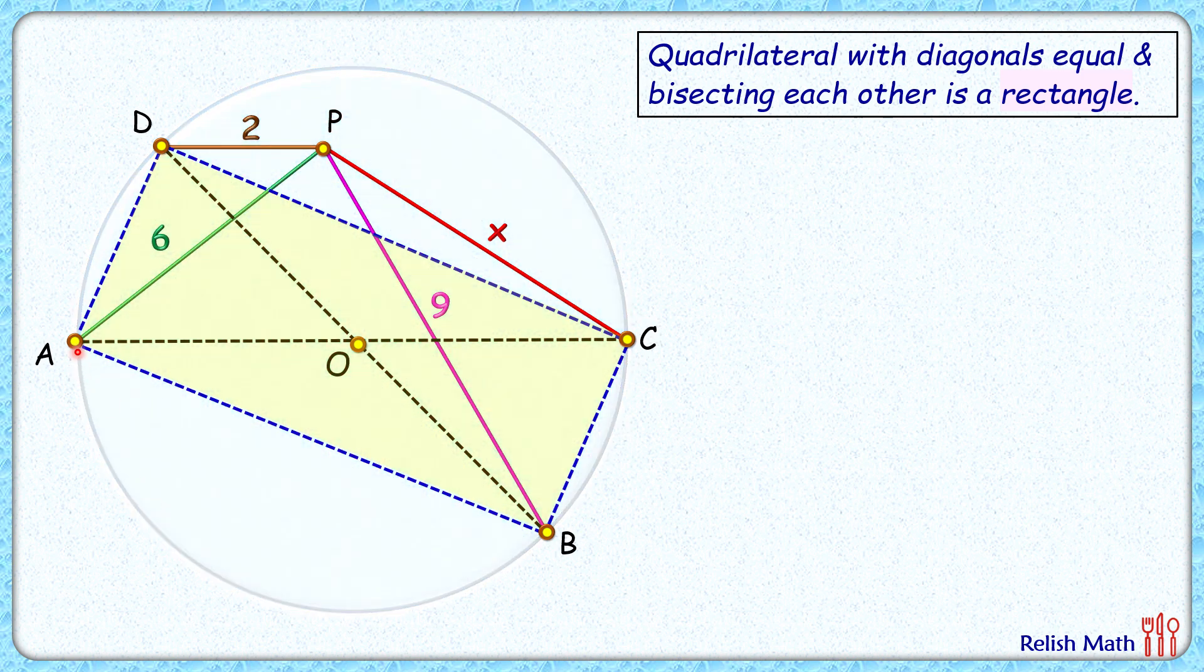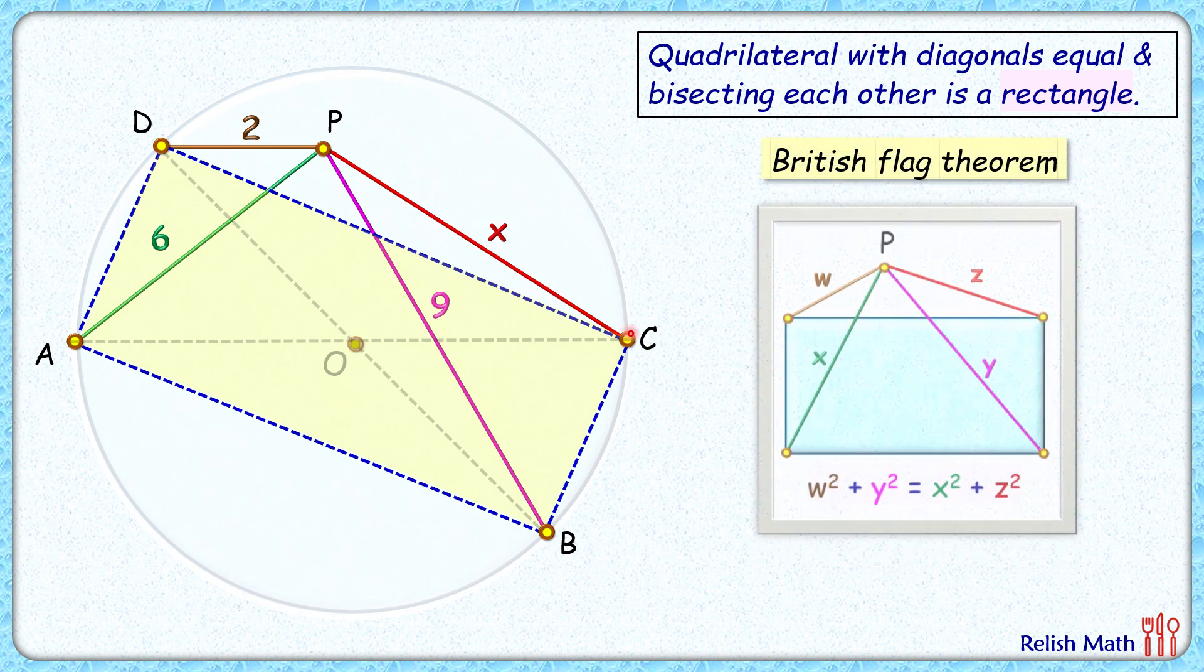And also we don't need the diameters or the diagonals of the rectangle anymore. So now we are left with the figure: a rectangle is there and a point outside P is there. And yes, here we can apply the British Flag Theorem.